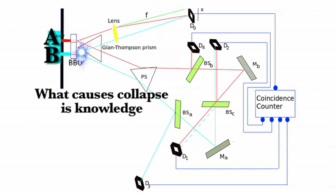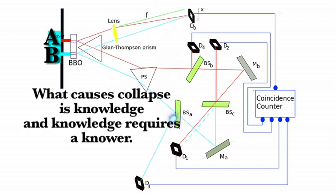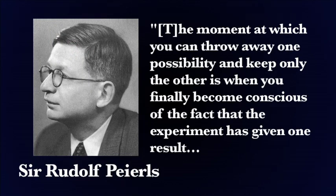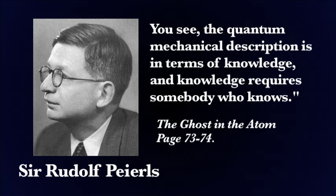See, what causes collapse is knowledge, and knowledge requires a knower. Sir Rudolph Peierls said, 'The moment at which you can throw away one possibility and keep only the other is when you finally become conscious of the fact that the experiment has given one result.' You see, the quantum mechanical description is in terms of knowledge, and knowledge requires somebody who knows.